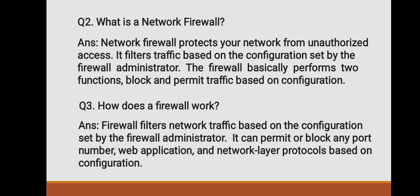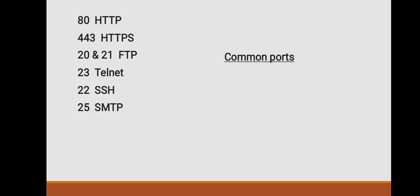How does the firewall work? A firewall filters network traffic based on configuration set by the firewall administrator. It can permit or block any port number, web application, and network layer protocols based on configuration. This is a very important question in L1 or L2 SOC analyst interviews. Common port numbers include: 80 for HTTP, 443 for HTTPS, 21 for FTP, 22 for SSH, 23 for Telnet, and 25 for SMTP. These are the most common port numbers asked in interviews.